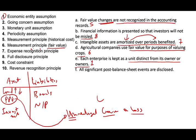Let's take a look at F: all significant balance sheet events are disclosed. We're talking about disclosure — telling users as much information as possible. What principle is that? When you tell users as much information as possible, it's the full disclosure principle.